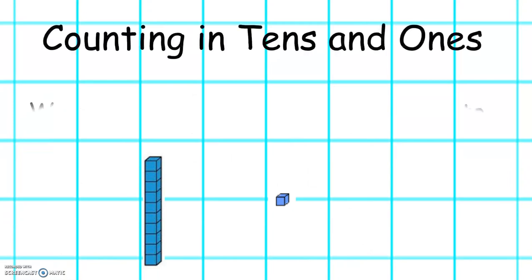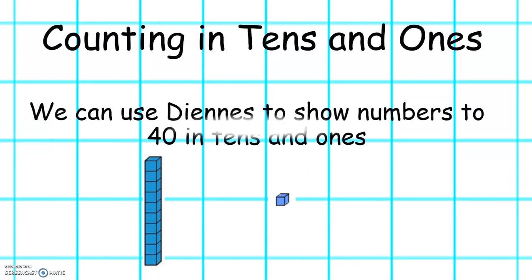We can also use something called Dienes Blocks to show numbers to 40 in tens and ones. This represents 10 and this represents 1.